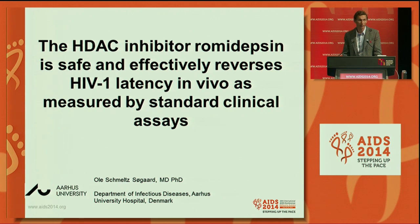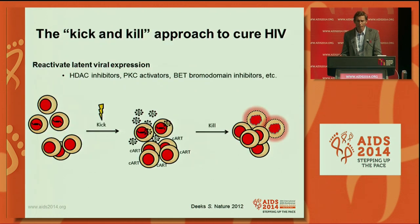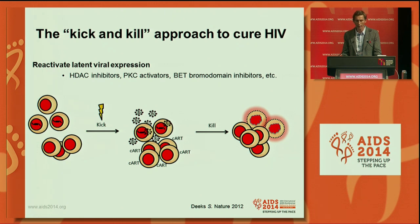The talk is on a small clinical trial with an HDAC inhibitor called romidepsin. To put this study into context, several years ago the kick-and-kill approach, or the show-and-kill approach, was proposed as a potential way to cure HIV infection. The idea is, in a patient who is well-suppressed on ART, to activate latently infected cells using a reactivating agent, and then to have expression and release of viral particles, which would enable the immune system to kill these latently infected cells.